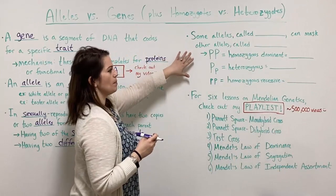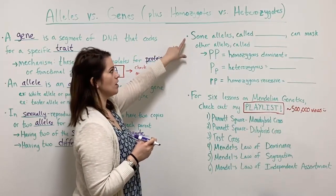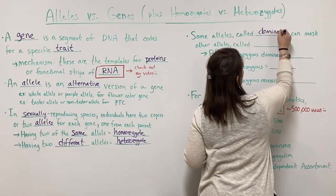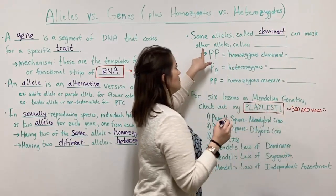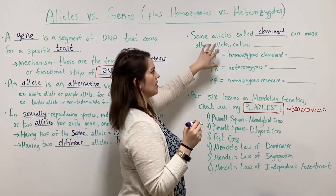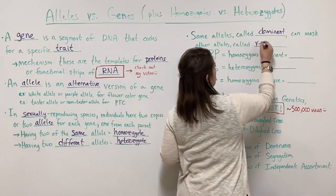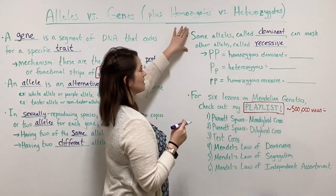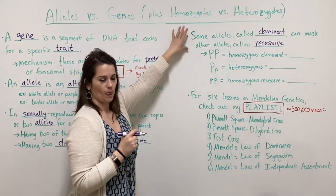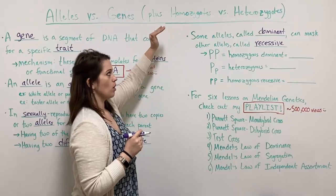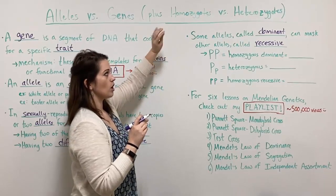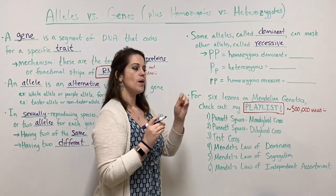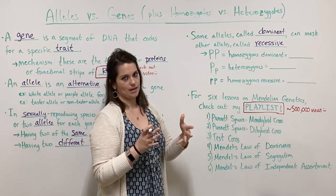Now let's talk about dominant and recessive. Some alleles, called dominant alleles, can mask other alleles, and the alleles that get masked are called recessive alleles. It's important to understand this is an oversimplification — yes, there are alleles that are dominant and completely mask a recessive allele, but not all traits are that simple.